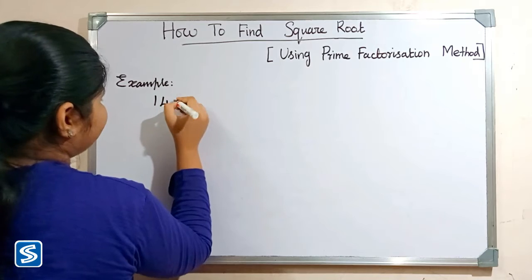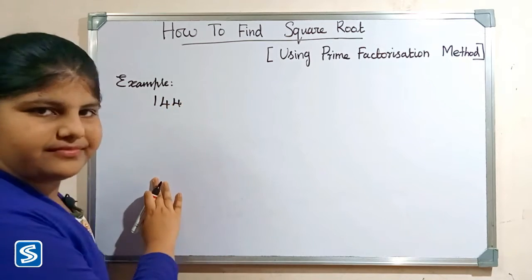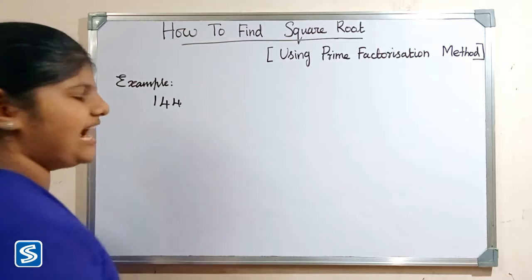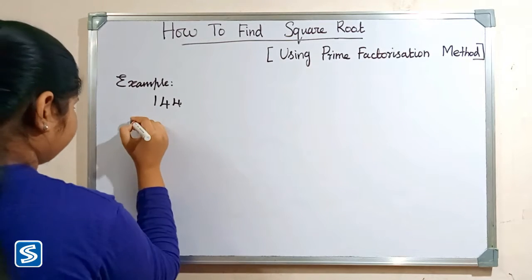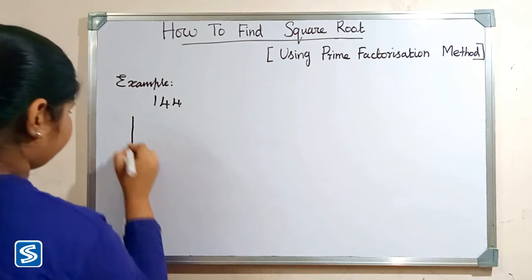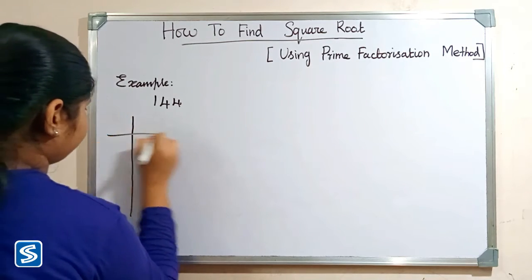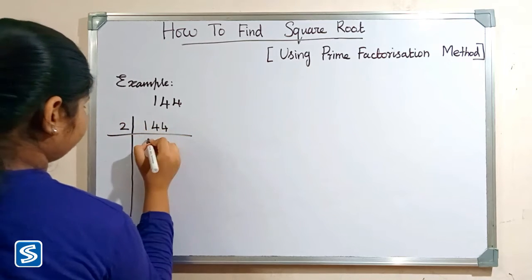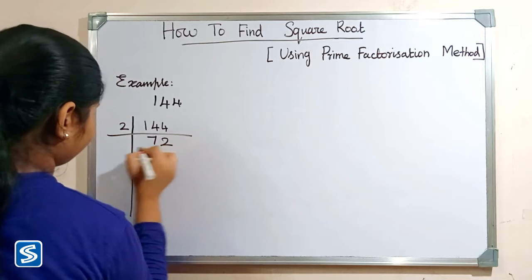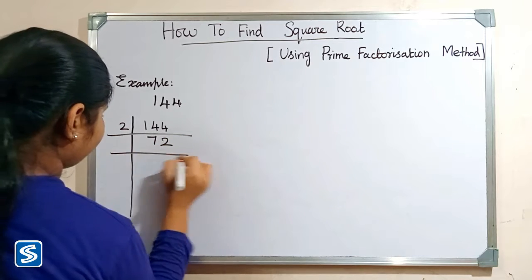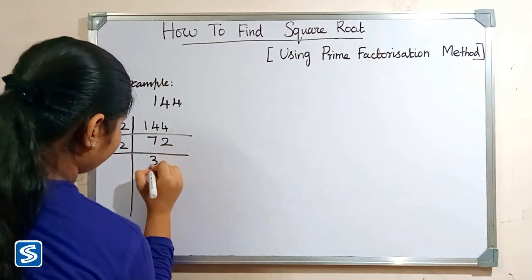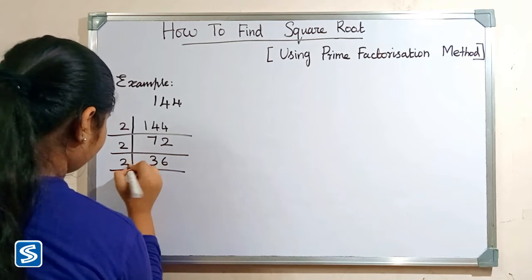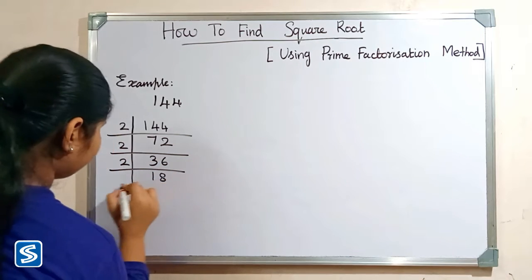For example, we can take: find the square root of 144. So first we have to find the factors of 144. Two seventy-twos are one hundred and forty-four, two thirty-sixes are seventy-two, two eighteens are thirty-six.